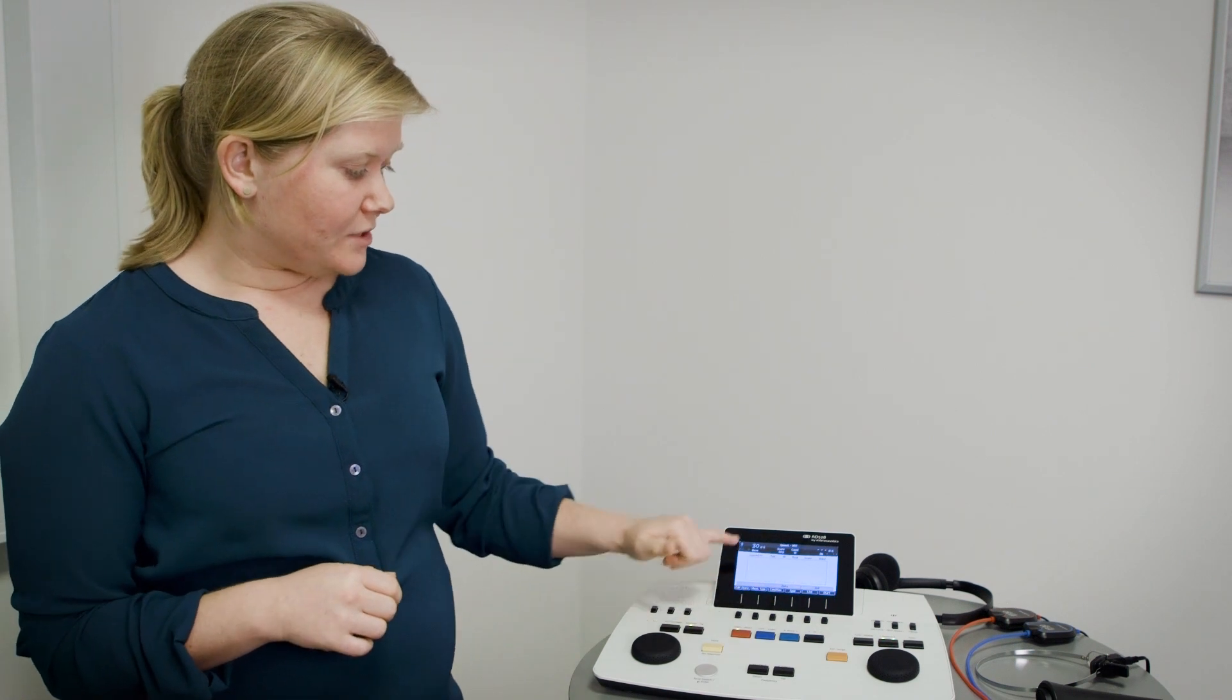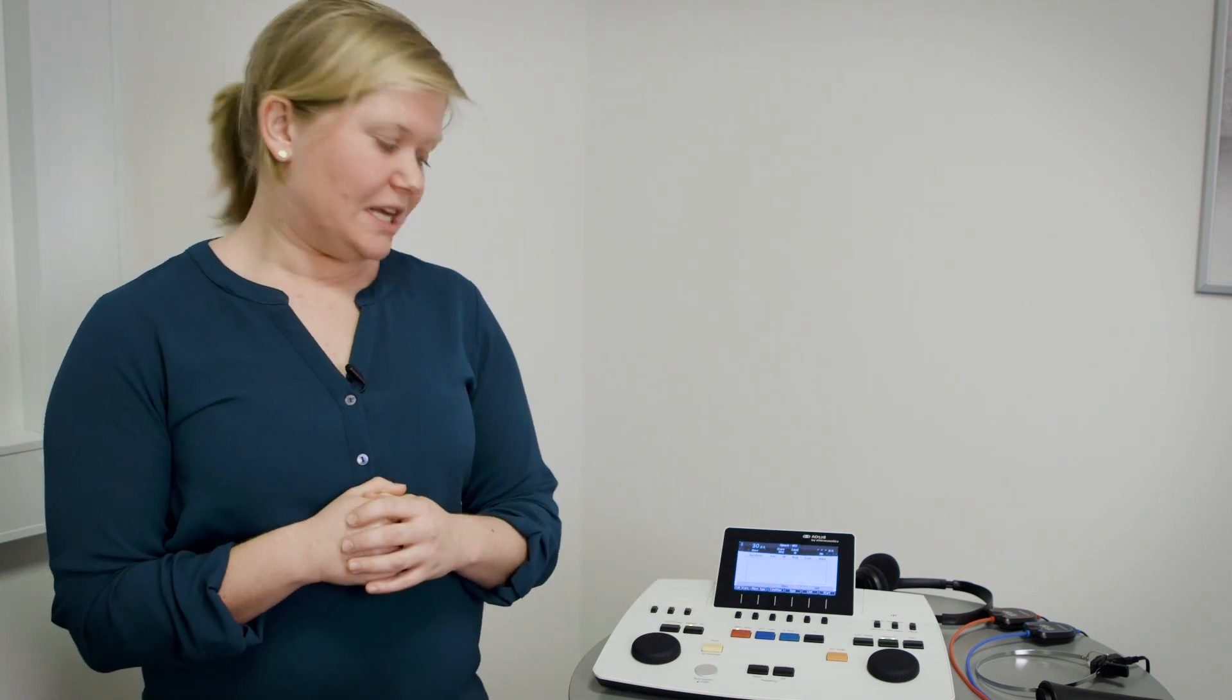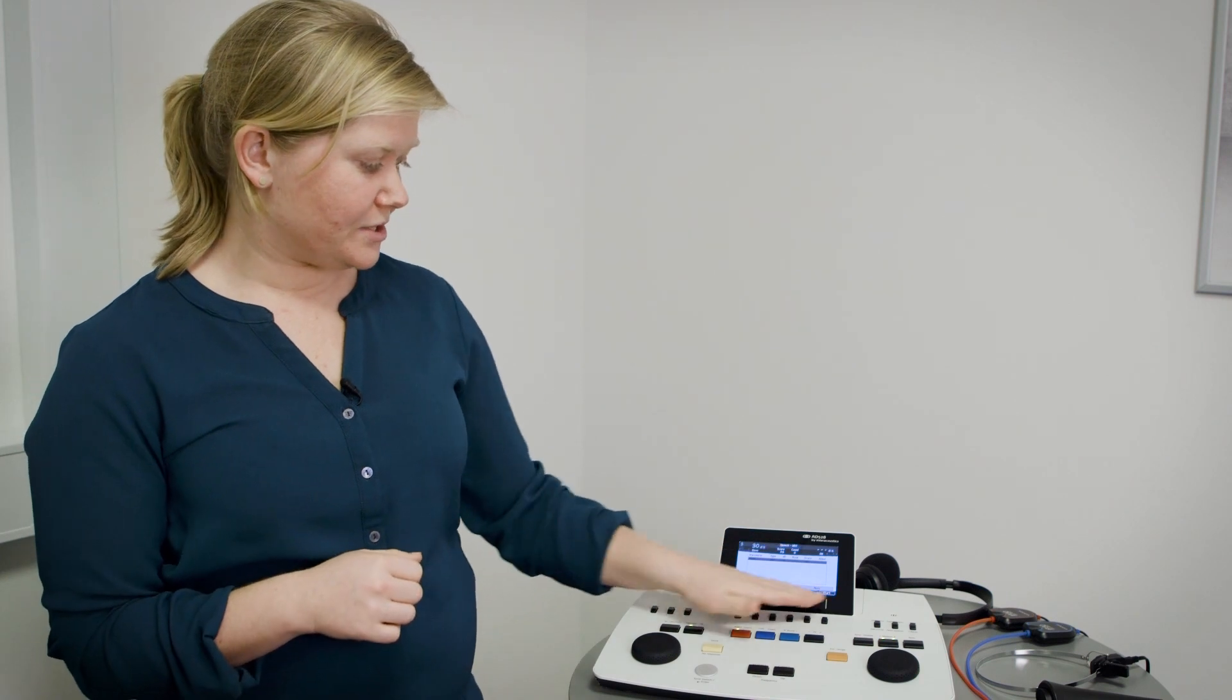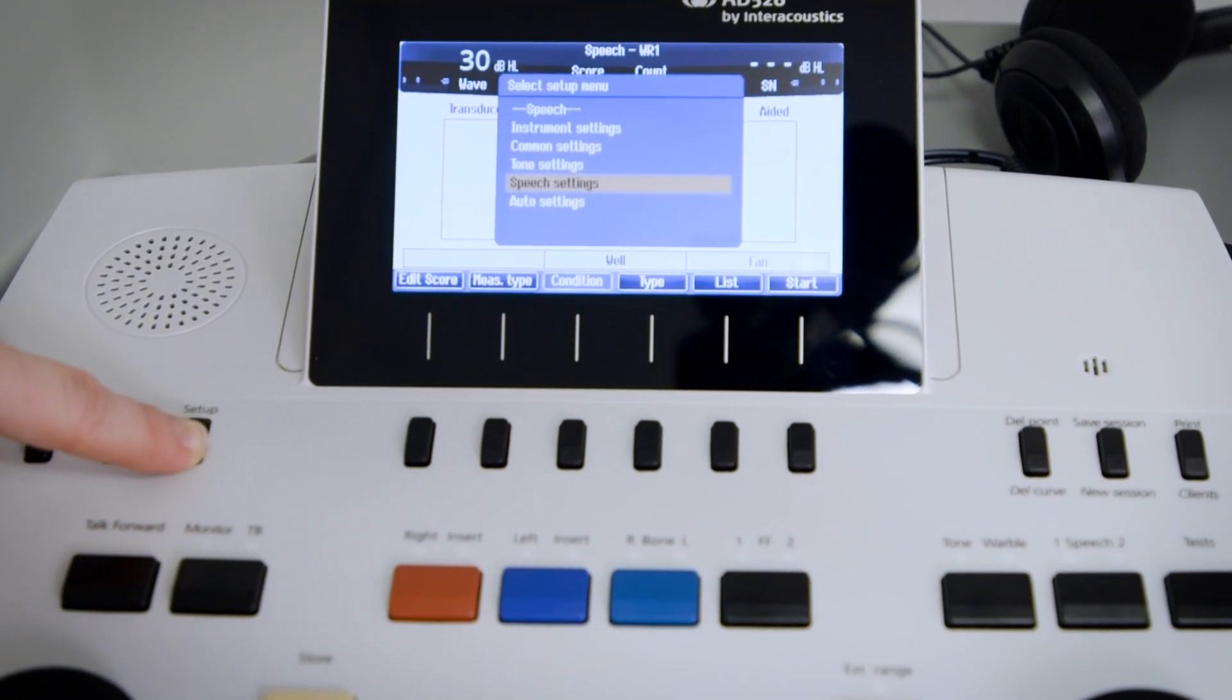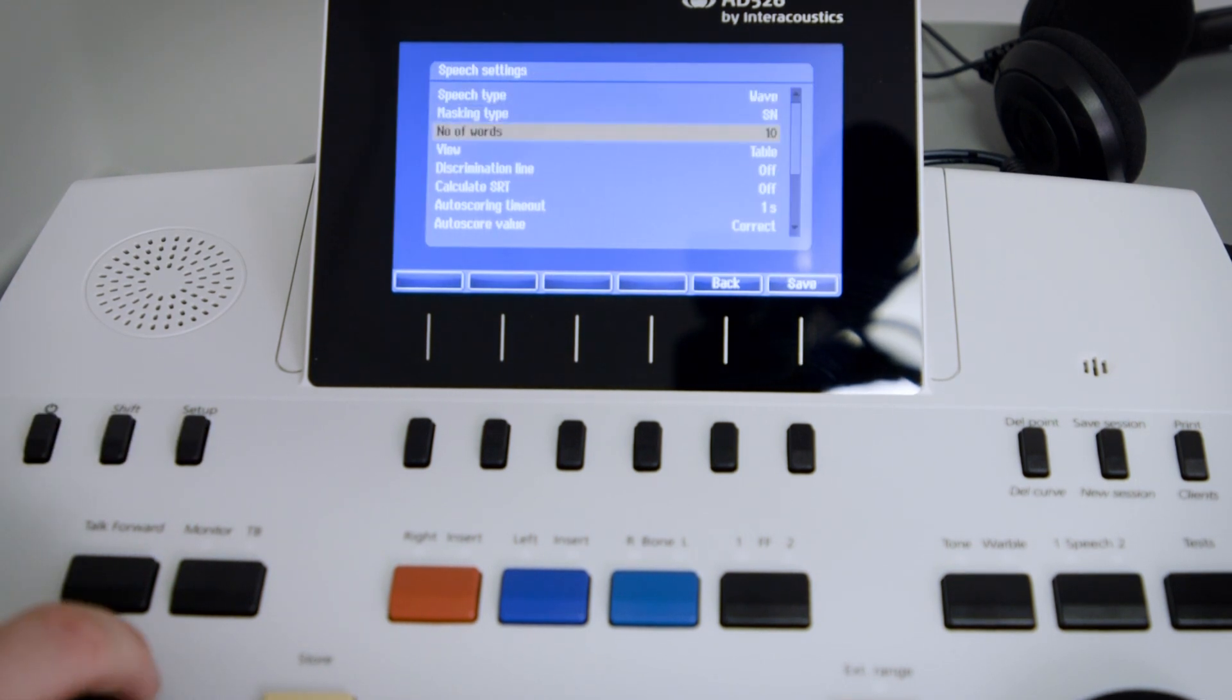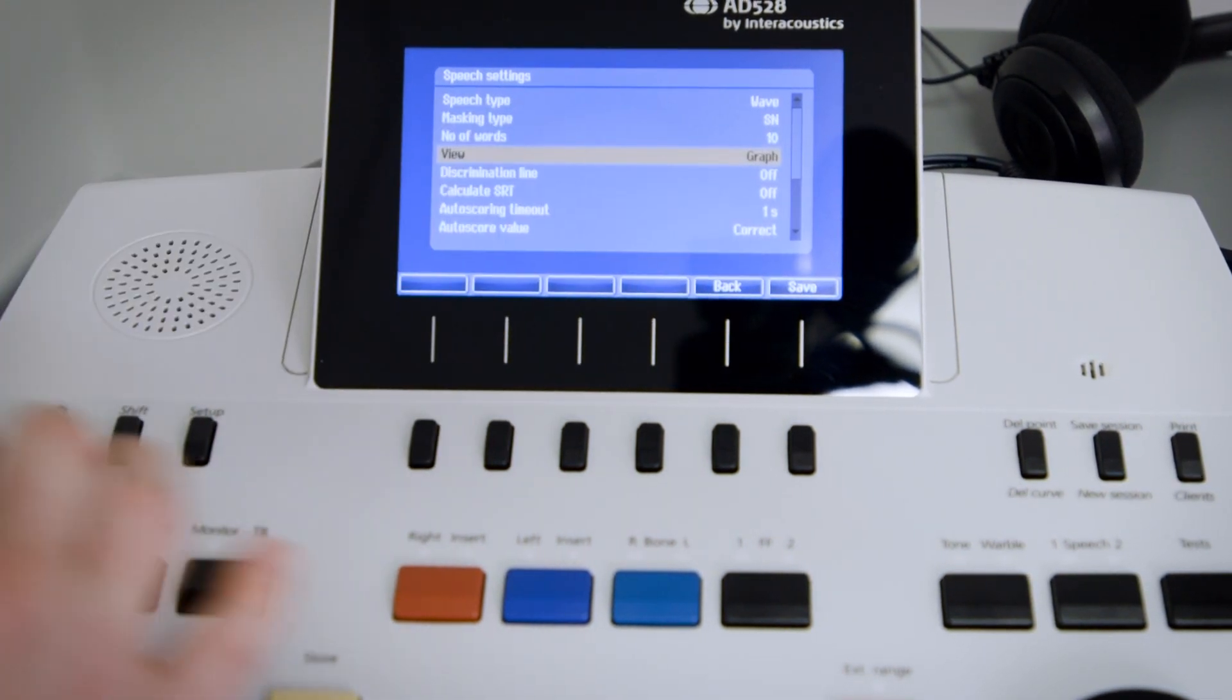Right now we have the table mode activated so we see everything in a table. So when I press store it appears in the table here. Instead of that we can also go into our speech setting and say I would prefer to see that in graph mode.